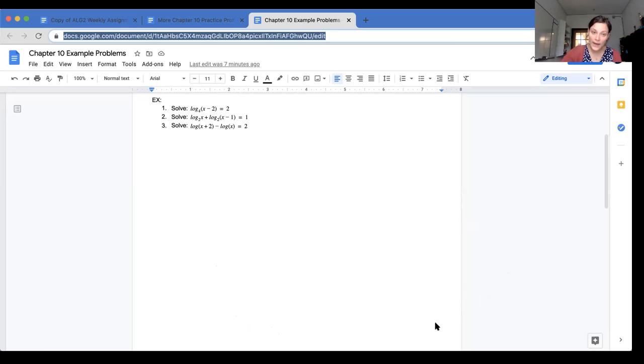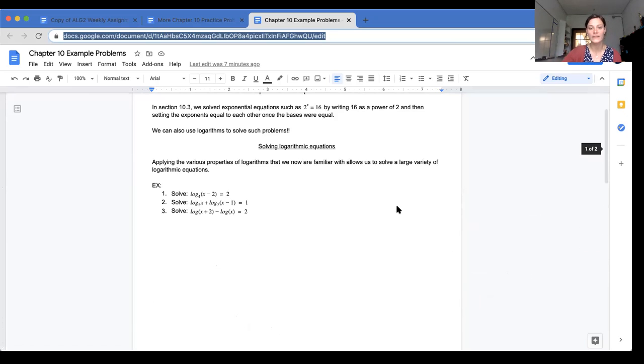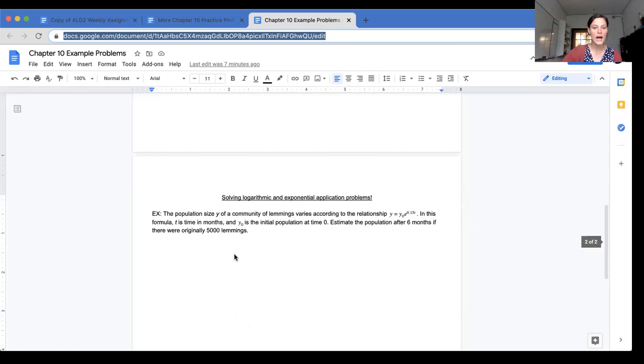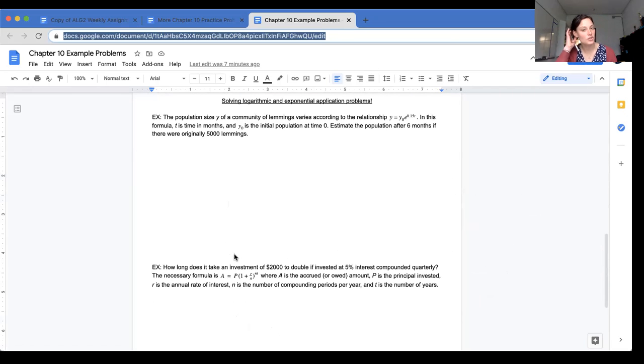Okay, so not too bad on the logarithmic equation problems. But now we're going to talk about exponential and logarithmic application problems. So first we're going to talk about population size. Population size y of a community of lemmings varies according to the relationship y equals y sub 0 e to the 0.15t. In this formula, t is time in months and y sub 0 is the initial population at time zero. Estimate the population after six months if there are originally 5,000 lemmings.